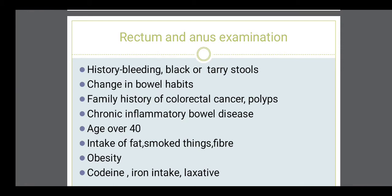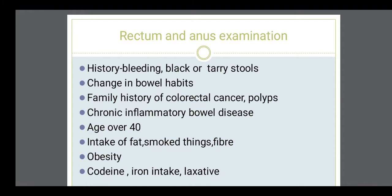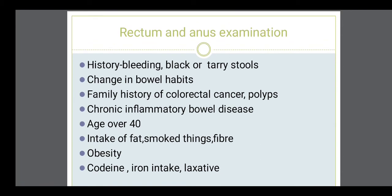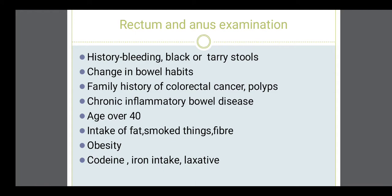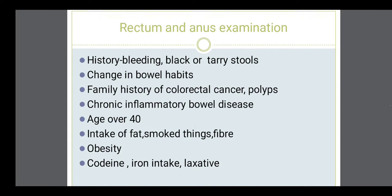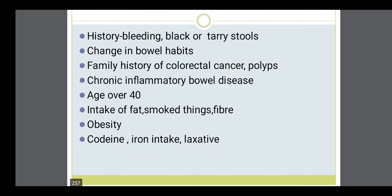We have to ask the patient regarding family history of colorectal cancer or polyps, chronic inflammatory bowel disease, and the dietary pattern — how much fat the person is taking, because high fat intake can be a risk factor for colon cancer. Less fiber in the diet can also precipitate colon cancer. For the examination, the lateral position is given to the patient and a proctoscope is used to examine the anus. Proper draping and privacy is required so that the patient does not feel embarrassed.